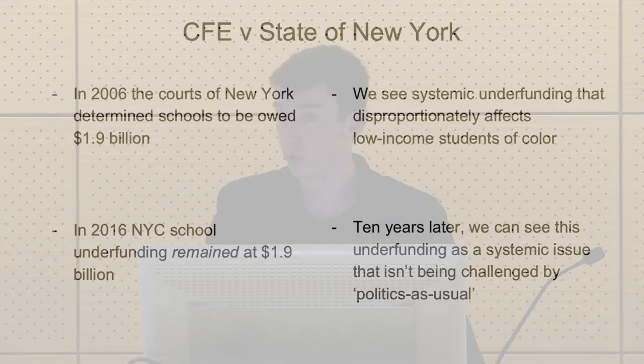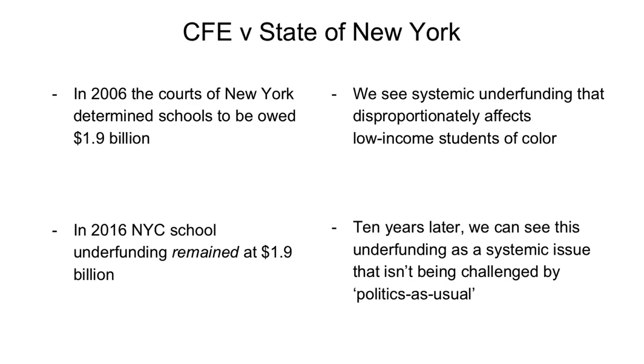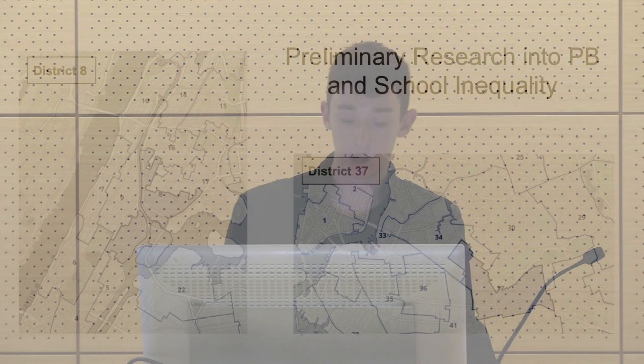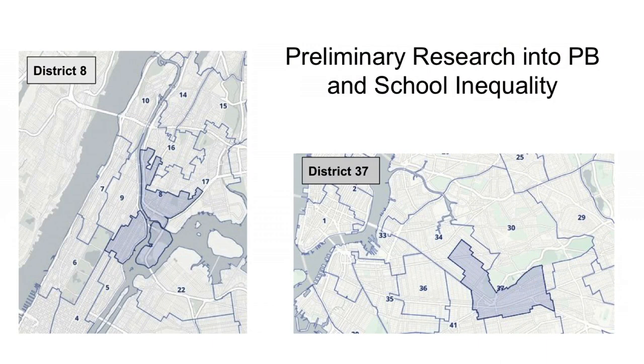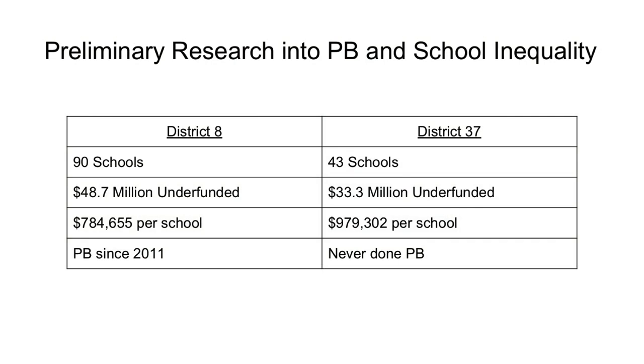We can see that New York City schools suffer from systemic underfunding disproportionately affecting low-income students of color, and that politics as usual is not addressing the issue. My research explores the potential of participatory budgeting to address these issues through community members themselves. It is a mixed-methods comparative study between District 8, encompassing East Harlem and parts of the South Bronx, and Council District 37, encompassing Cypress Hills, Bushwick, and East New York. District 8 started PB in 2011; District 37 has never elected to do it.